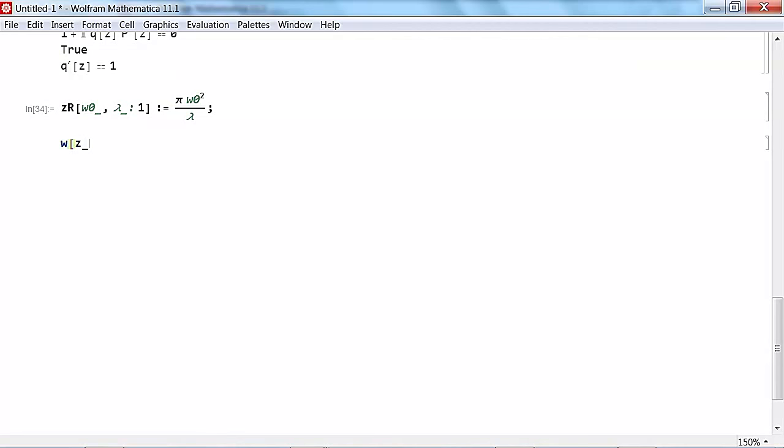And we also want to write down what we just found, which was the waist as a function of z. So it depends on how far along the axis you are, the minimum spot size, w0, and again, the wavelength, which we're going to set to be equal to one by default. So it is w0 times the square root of one plus z on zr all squared. And now we're ready to plot this. Let's plot it for a waist of one. I'm going to go from like negative six to six.